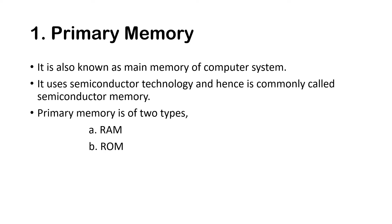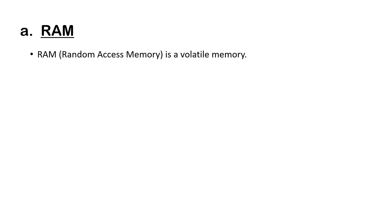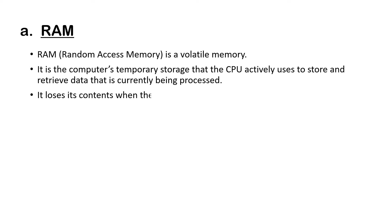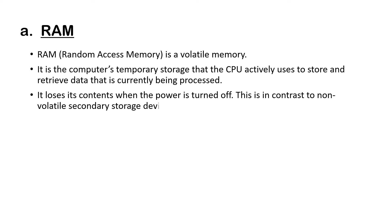Primary memory is of two types: RAM and ROM. RAM, which is Random Access Memory, is a volatile memory. It is the computer's temporary storage that the CPU actively uses to store and retrieve data that is currently being processed. It loses its contents when the power is turned off, in contrast to non-volatile secondary storage devices like hard drives or SSDs.